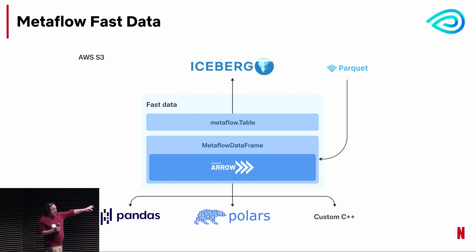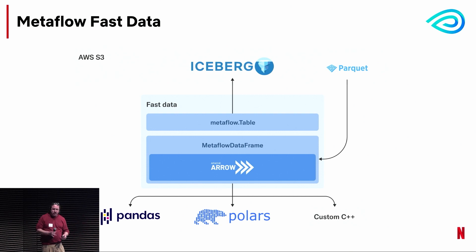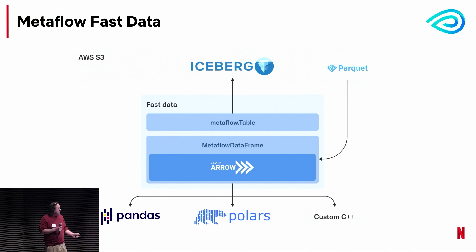What we've built are two user interfaces: Metaflow.table and Metaflow.DataFrame. Metaflow.table is about interacting with the data warehouse, doing scanning and discovery. Metaflow.DataFrame is our in-memory representation — this is how your data is going to land. You can think of it as a highly performant Pandas without some of the data science features; it's really just about storing the data. At the end of the day, you can output to whatever framework you want: Apache Arrow, Pandas, Polars, or even custom C++ code.